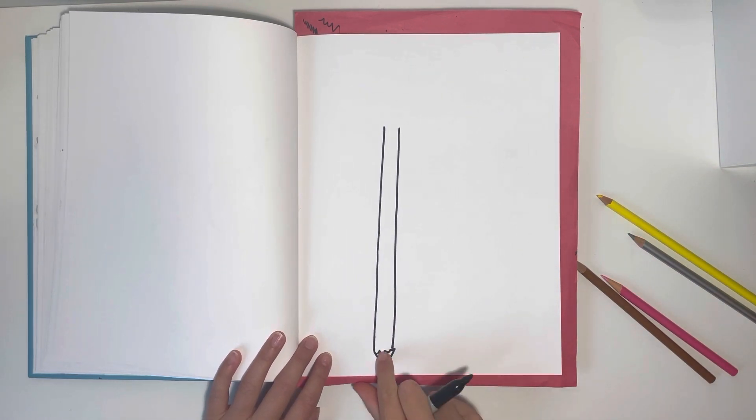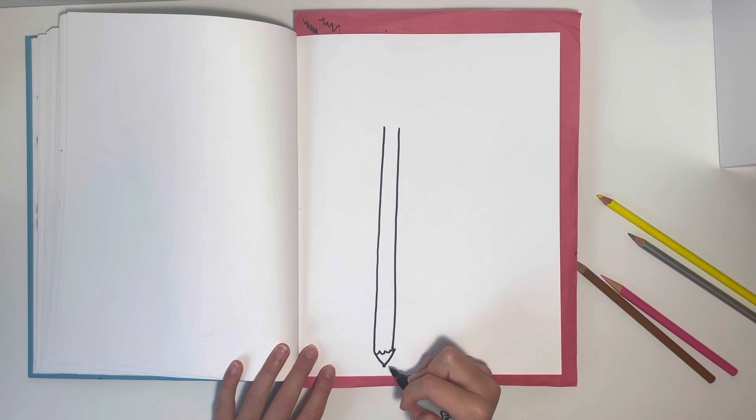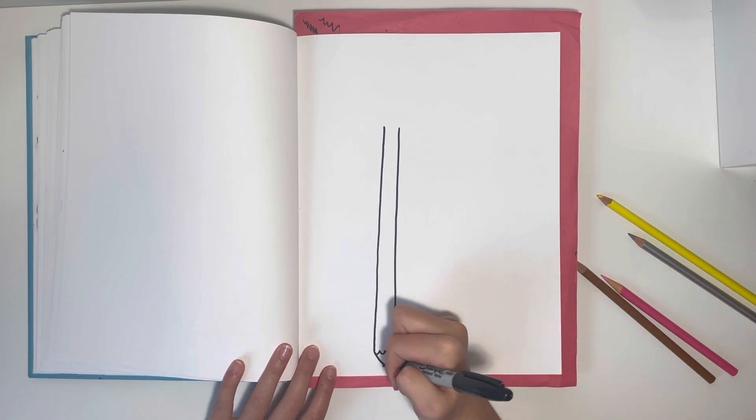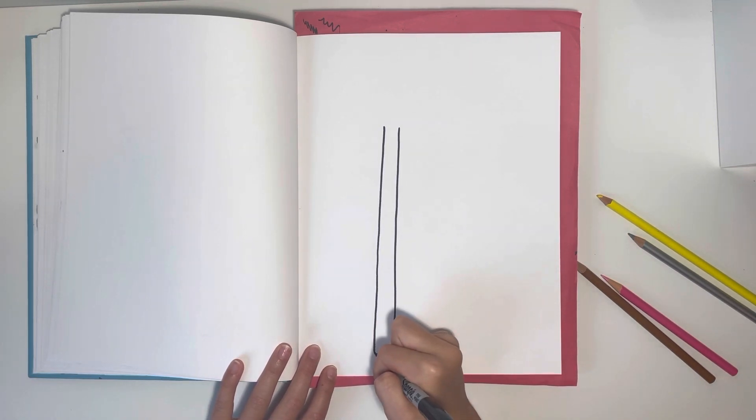These lines here show that the pencil's been sharpened and to make our pencil have a little point we're going to draw a little line and color it in.